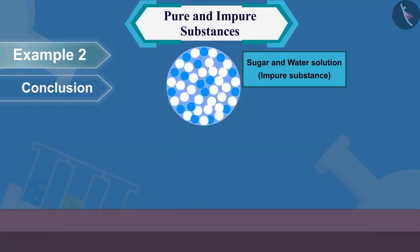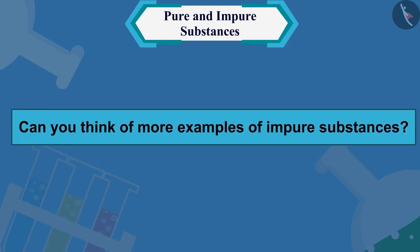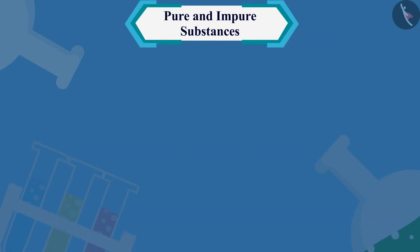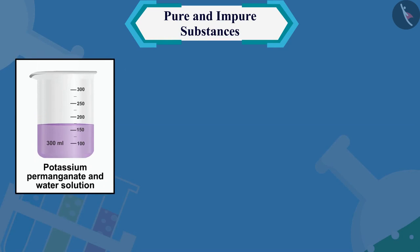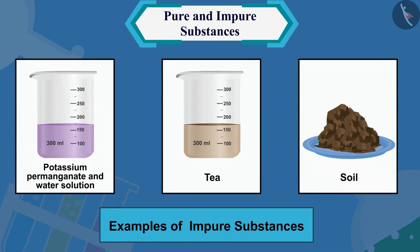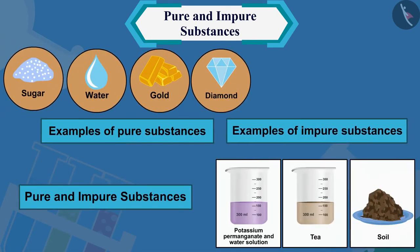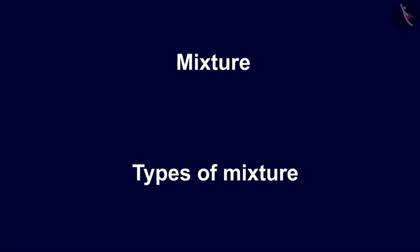But can we separate sugar or water into their components by some physical process? No. From this activity we can conclude that the solution of sugar and water is an impure substance, or mixture, which consists of two pure substances — sugar and water. Other examples of impure substances include potassium permanganate and water solution, tea, and soil. Hope you have got a good understanding of pure and impure substances. In the next video we will learn about mixtures and types of mixtures.